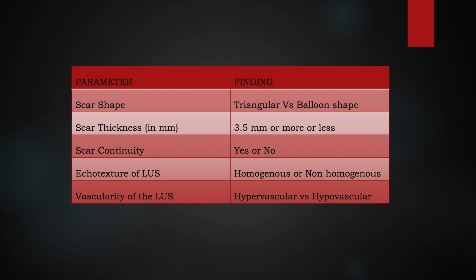We look for vascularity, which might be difficult to demonstrate according to machine settings. It can be hypervascular or hypovascular. Hypovascular indicates a well-perfused scar and is considered a better scar.